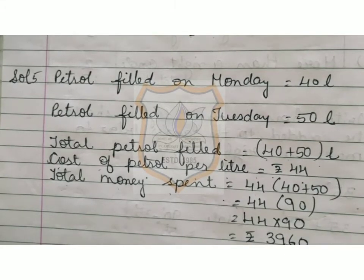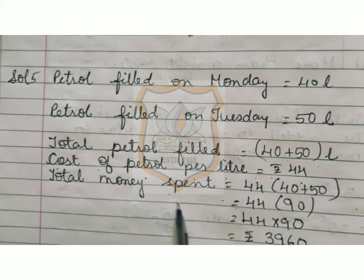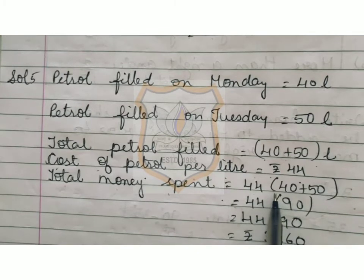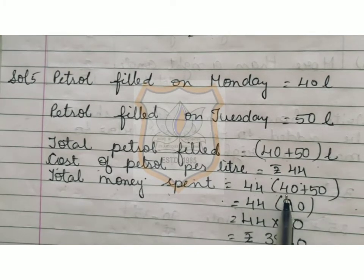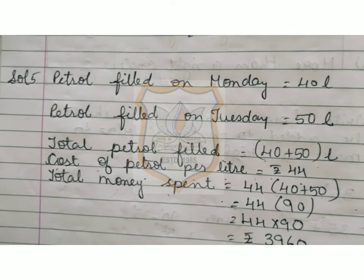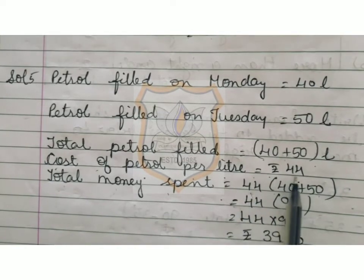Now what we have to find out is the total amount spent on petrol. So total money spent is equal to 44 multiplied by 40 plus 50. Here, according to the distributive property — as I explained in my previous video — the common number is taken in the front. Here the common number is 44.